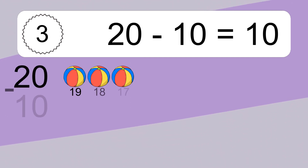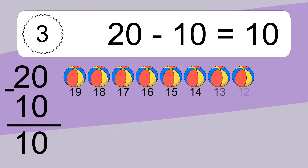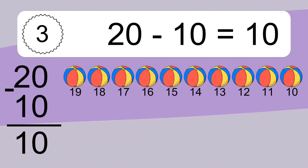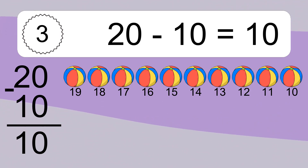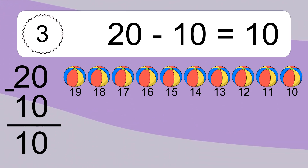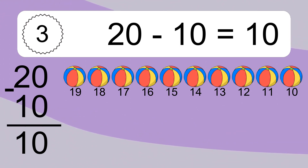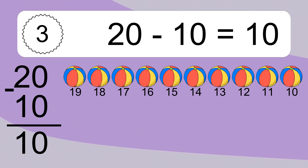20 minus 10 equals what? 20 minus 10 equals 10. Let's count it. 19, 18, 17, 16, 15, 14, 13, 12, 11, 10.